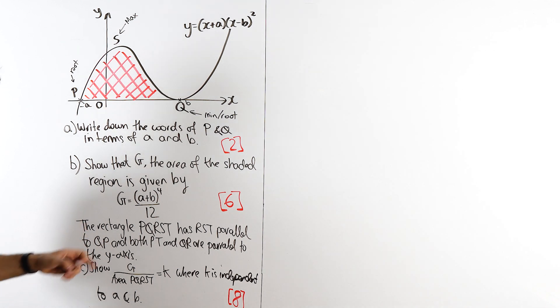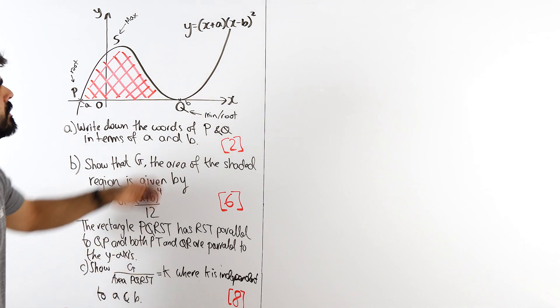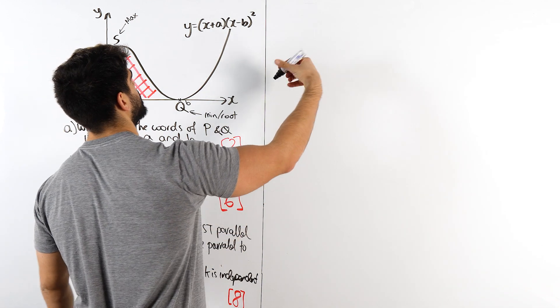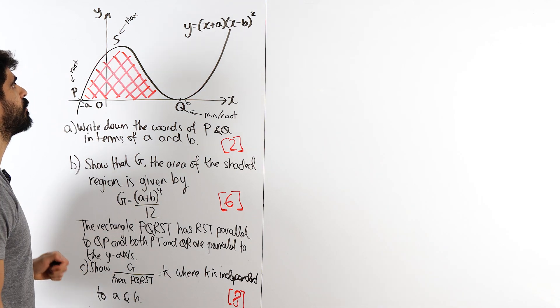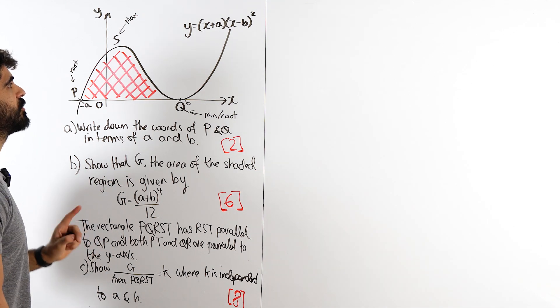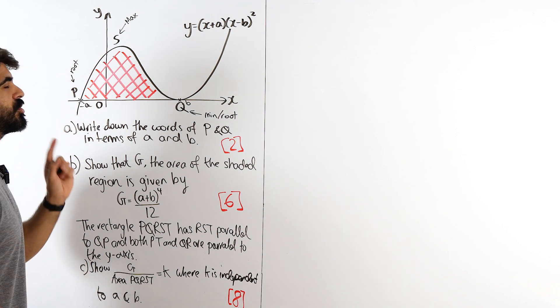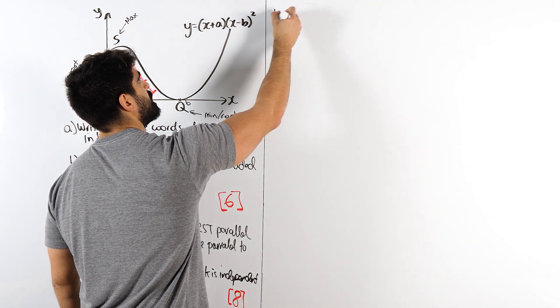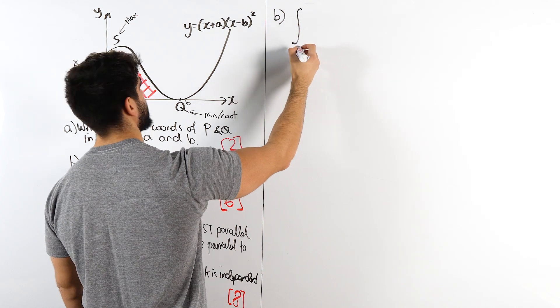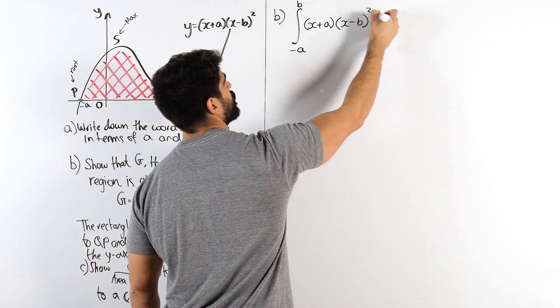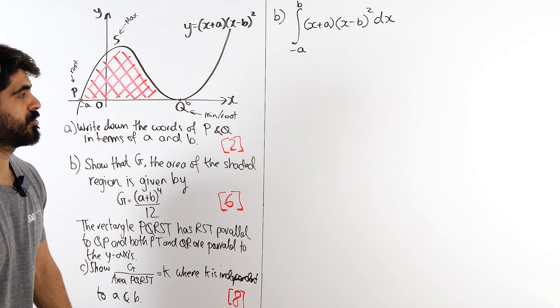Show that G, the area of the shaded region, is given by this. We need to integrate this function between minus a and b. It looks easy, but I don't think that's the case because they have a plus b to the power of four. That's a bit of a sticky one. Some students might be thinking to expand all the brackets. I actually don't think that's a good idea. You could integrate term by term, but it's going to get quite messy.